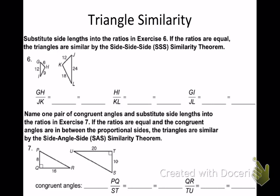Take a couple seconds to try these last two on your own. It says substitute the side lengths into the ratios in exercise 6. If the ratios are equal, then the triangles are similar by the side, side, side similarity theorem. Try these last two on your own. All right, Trent, number six. GH over JK, what's GH over JK? 6 over 12. What's that simplified to? One half. The second part, HI over KL. What's HI over KL, Luis? 9 over 18. What's that simplified to? One half. And GI over JL. Quinn, what's GI over JL? 12 over 24. And what's that simplified to? One half. So as you look, are all the proportions the same? Yeah, they're all one half. So that would be side, side, side similarity.